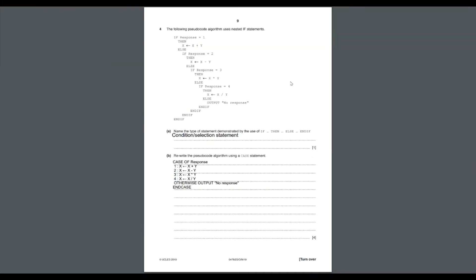Question number four: the following pseudocode algorithm uses nested IF statements. Nested IFs are basically IF statements within IF statements. Reading from the beginning: IF response = 1 THEN x ← x + y, ELSE IF response = 2 THEN x ← x - y. The arrow basically means assignment — you're assigning a certain value to the variable.